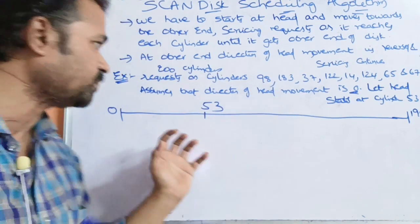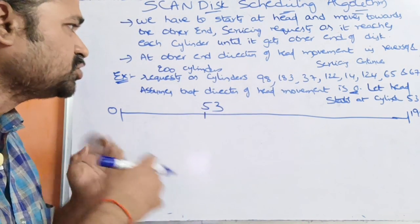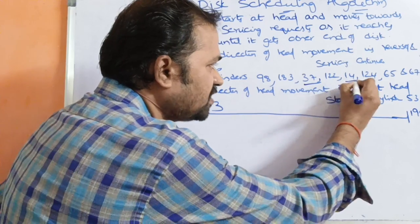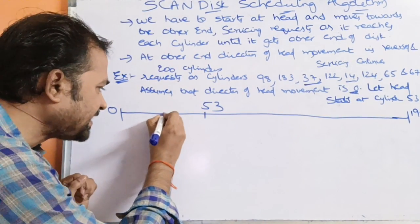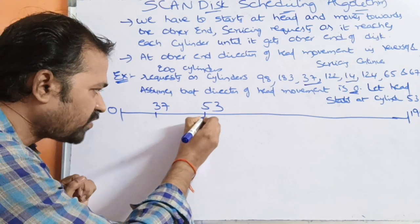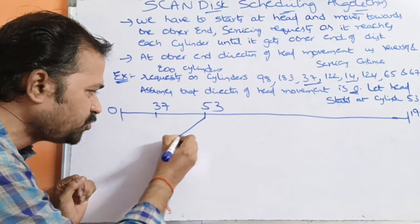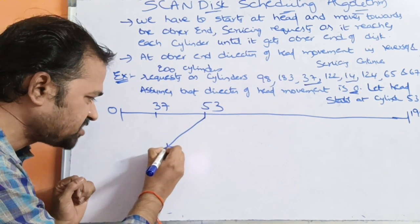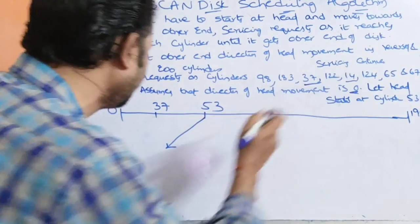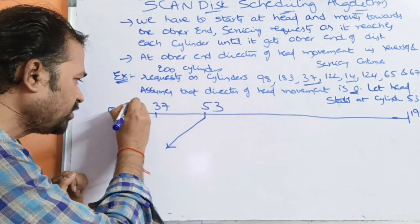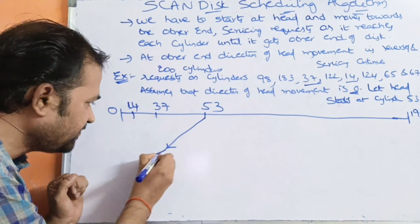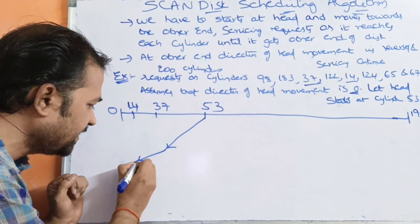From 53 moving toward 0, the first request we encounter is cylinder 37, so that request is served. Next, after 37, we have cylinder 14, which will be served next.